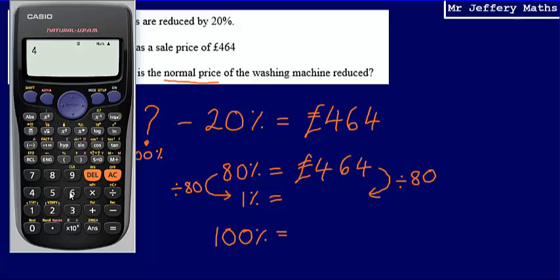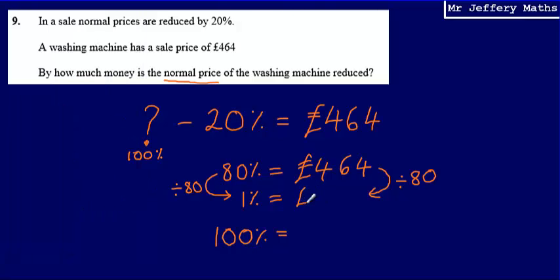So £464 divided by 80. That's going to give me 5.8, so that's going to give me £5.80. So I've worked out what 1% is going to be. Now if I know what 1% is, to get from 1% to 100, what I'm going to have to do is just multiply by 100. So that is going to give me £5.80 multiplied by 100. That's going to give me £580. So I now know that the normal price of the washing machine was £580.